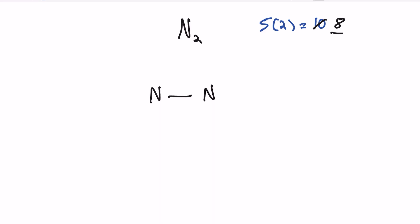This first nitrogen already gets two electrons from the bond, so it can fit six more. I'll draw six electrons around it and subtract six from our total, leaving us with two. I'll put the remaining two electrons around the other nitrogen, leaving us with zero valence electrons. That's step four done.